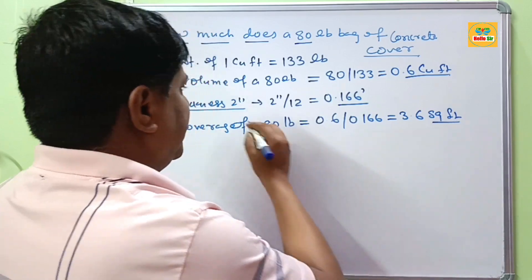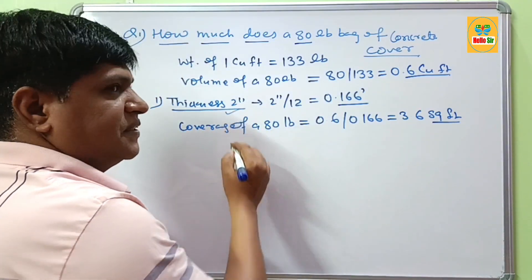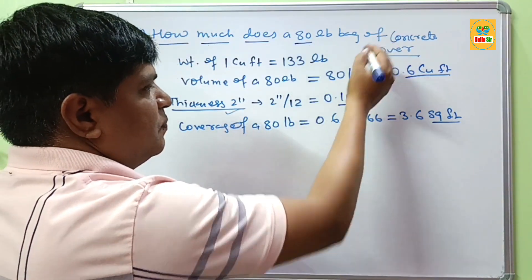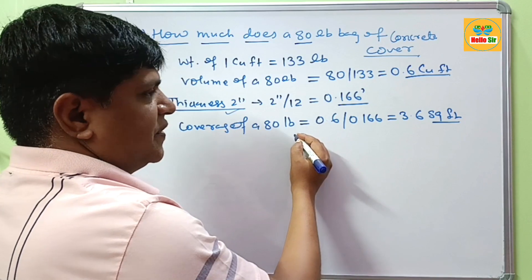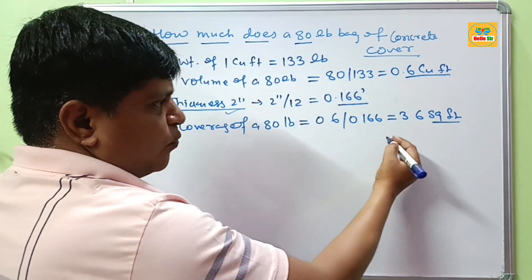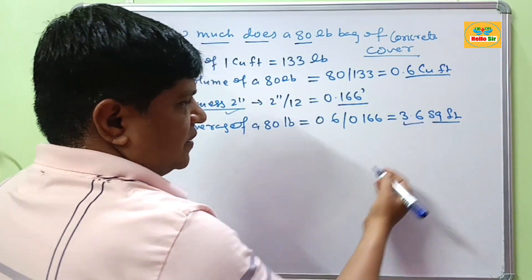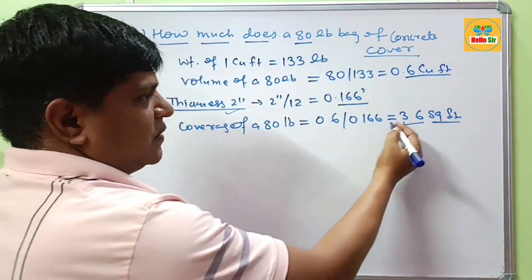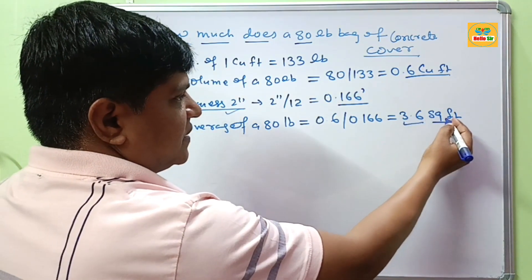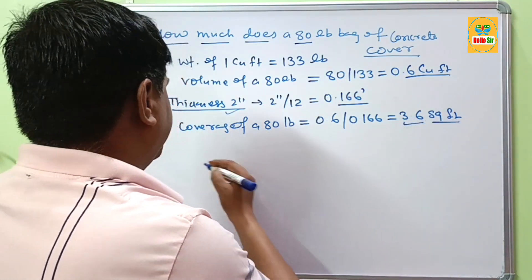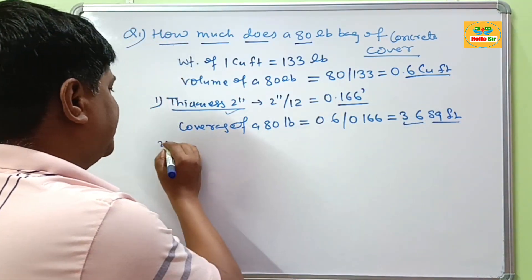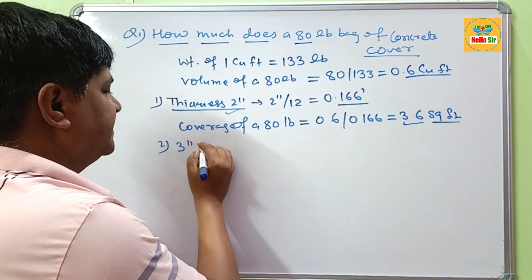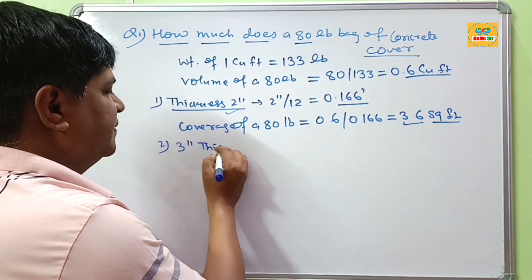At a 2-inch thickness, one 80 lb bag of concrete will cover about 3.6 square feet.